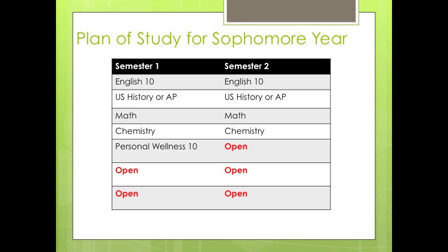For Math: if you are currently in Algebra 1, you would register for Geometry. If you are currently in Geometry, register for Algebra 2. If you are in any other math class, speak with your current math teacher or your counselor to help determine which class is right for you. If you have taken both Physics X and Chem X this year, you would sign up for Biology or AP Biology. Whether you choose AP or Regular will be up to you — speak with your current teachers, counselors, parents, and friends for recommendations.